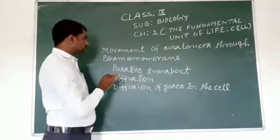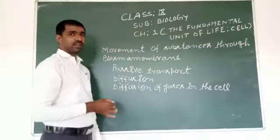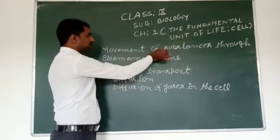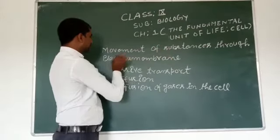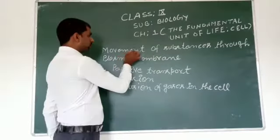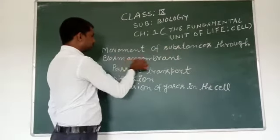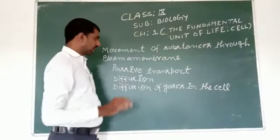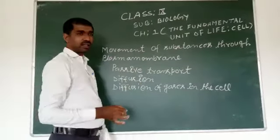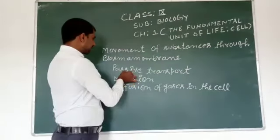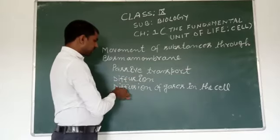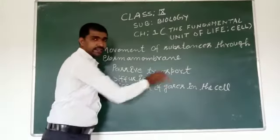Inside this chapter, we are going to discuss the topic: Movement of Substances Through Plasma Membrane. Inside this topic, we are going to discuss Passive Transport, Diffusion, and Diffusion of Gases in the cell.